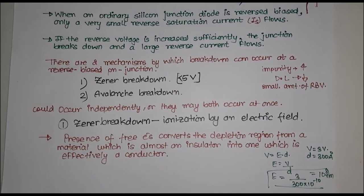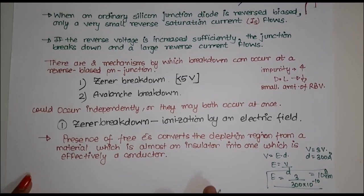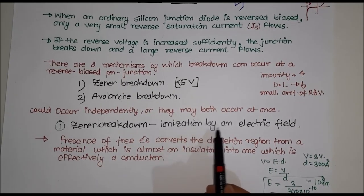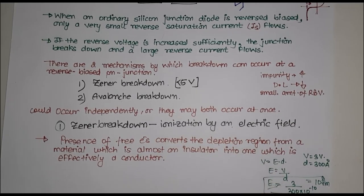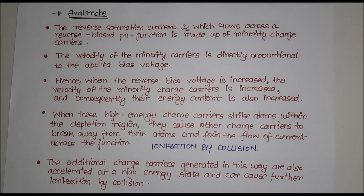This electric field of 10⁸ V/m is very large — it is enough to break all the covalent bonds. All covalent bonds will break, and we'll get more free electrons. More free electrons means more charge carriers, and more charge carriers means more current. Therefore, suddenly the current value increases here, and that is the reason why it is called ionization by an electric field.